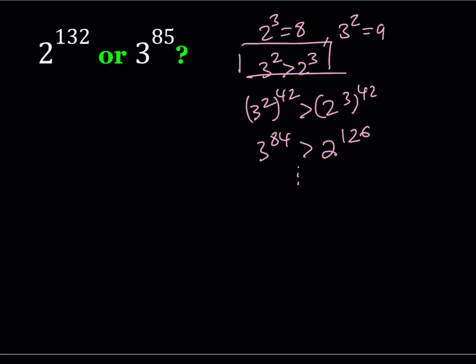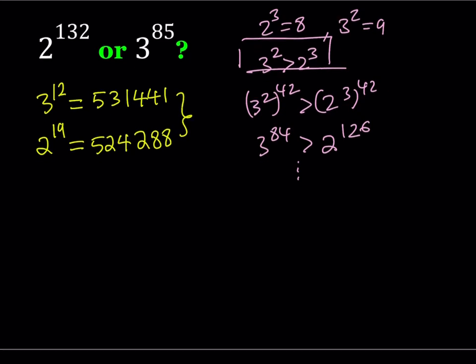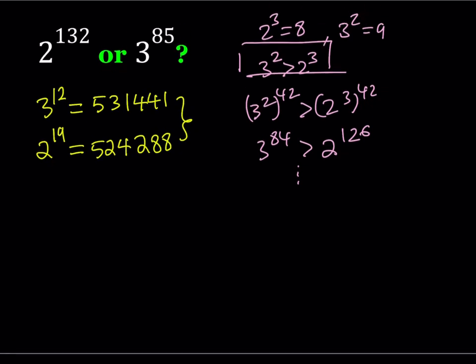I can evaluate 3 to the power 12. And for the sake of time, I'm just going to give you what it is: 531,441. And I'm going to evaluate 2 to the power 19, again, which is a very large number, 524,288. So these numbers are pretty close. How do I know that? Because I do have a chart that compares different powers. That's how I know. Now we can safely say that 3 to the power 12 is greater than 2 to the power 19.